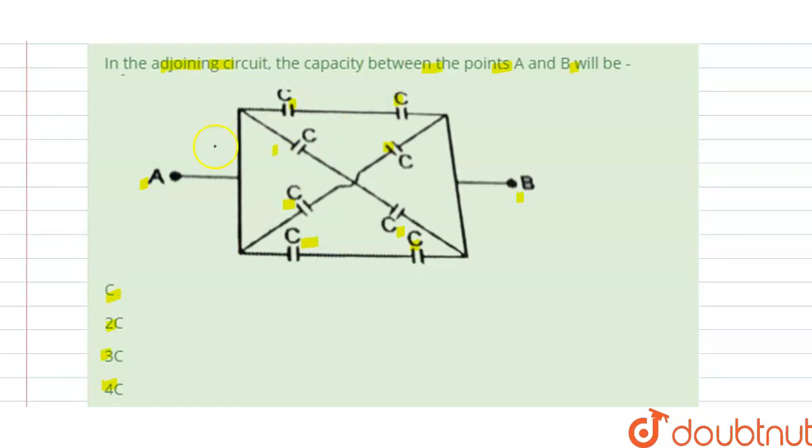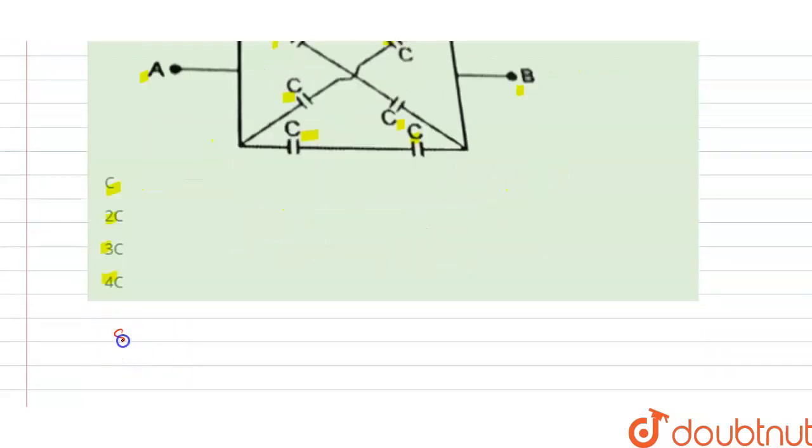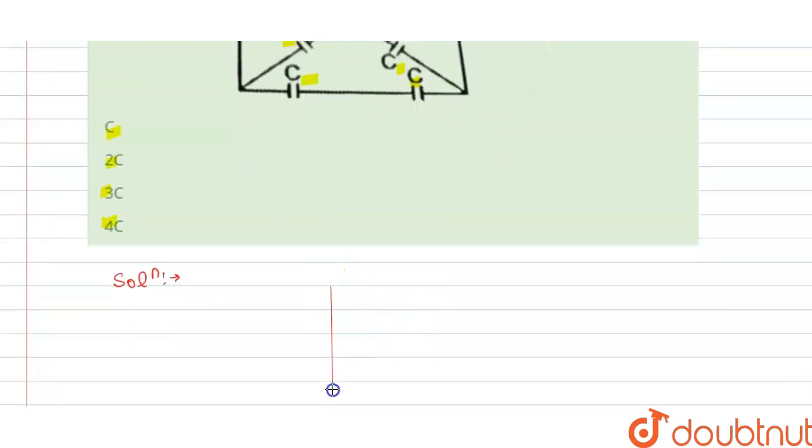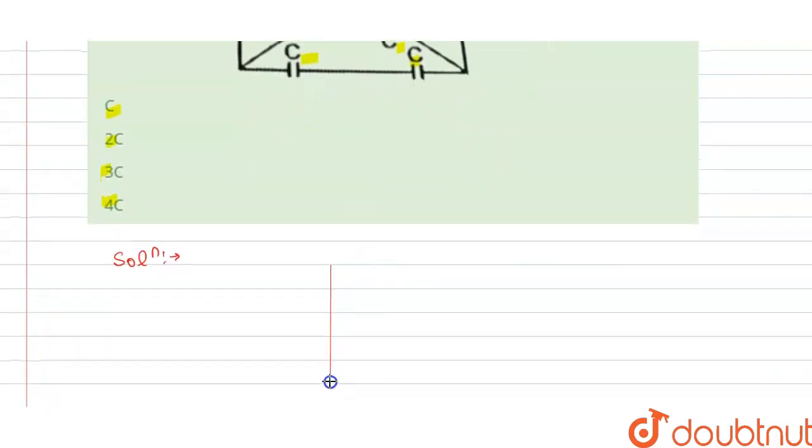So the capacity between A and B point is... The solution of this question is firstly we draw the equivalent circuit diagram to it. So this is connected here and this is here, and this is connected to A and this is connected to B.